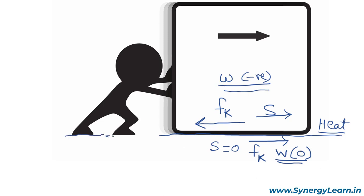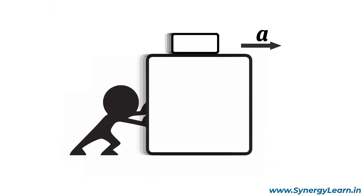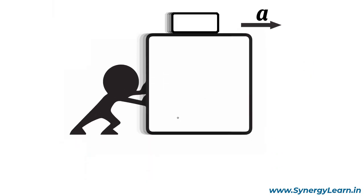For the man, the foot is firm against the ground while pushing the block, so the friction on the foot of the man will be static, acting in the forward direction. The work done by this friction on the foot of the man will be zero, as there is no displacement. So here, no energy exchange takes place.